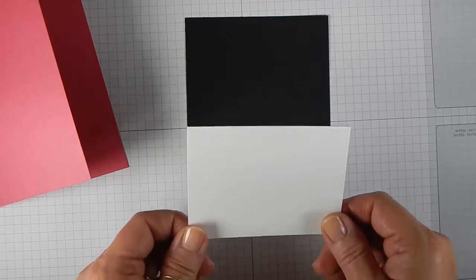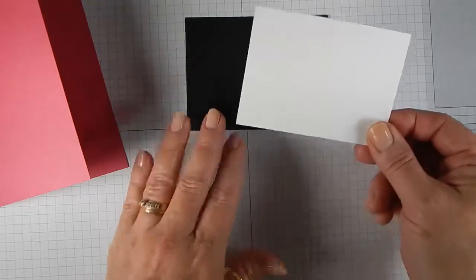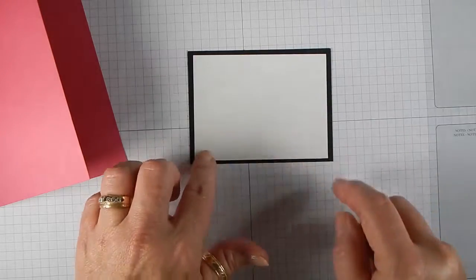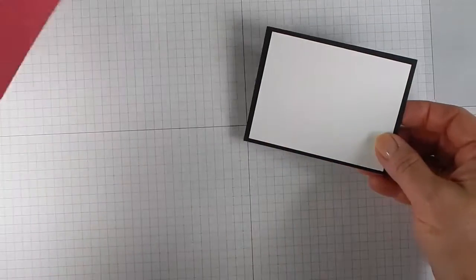The next piece of cardstock we have is Whisper White. We've cut this at 3 by 4. And what happens is, when we get done stamping, we will layer this onto the basic black to make a mat to go onto the card.